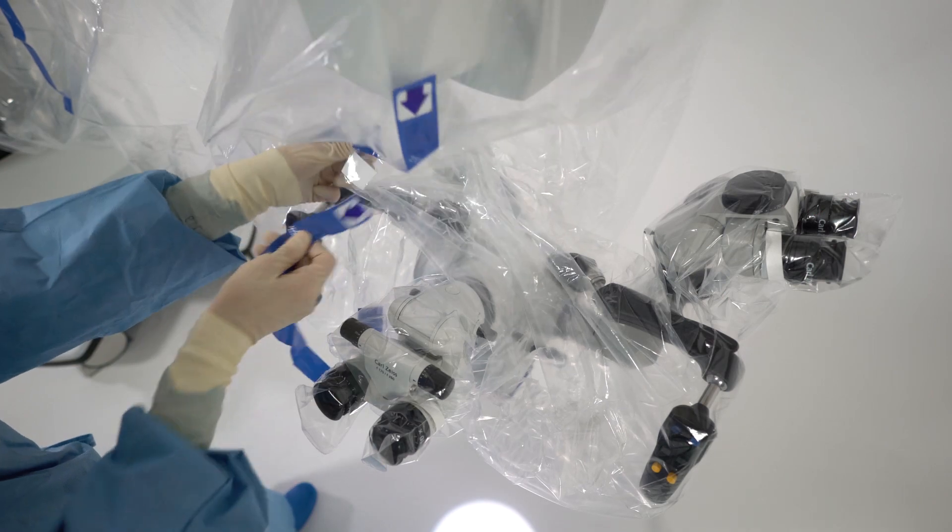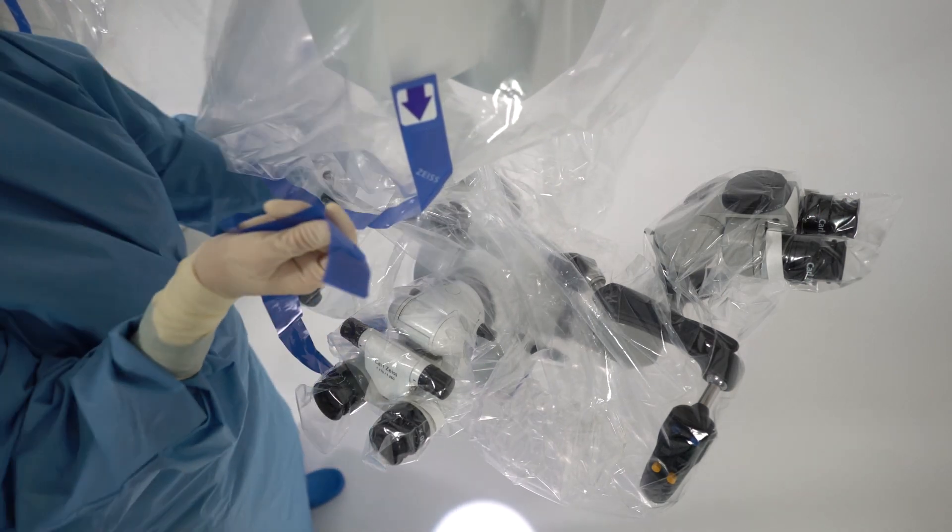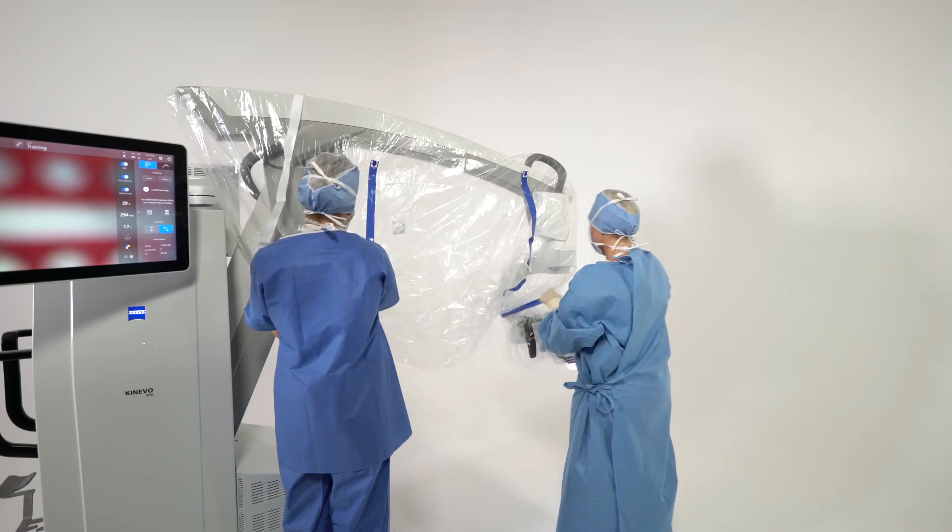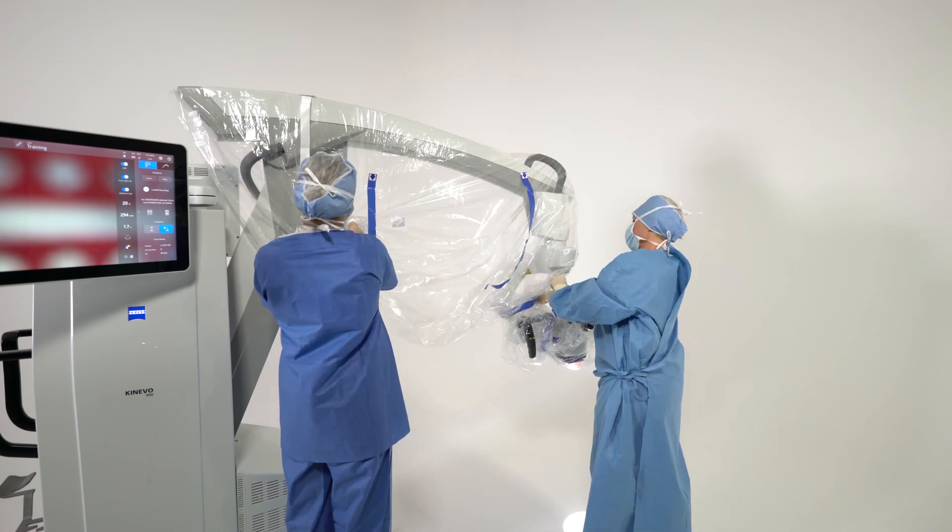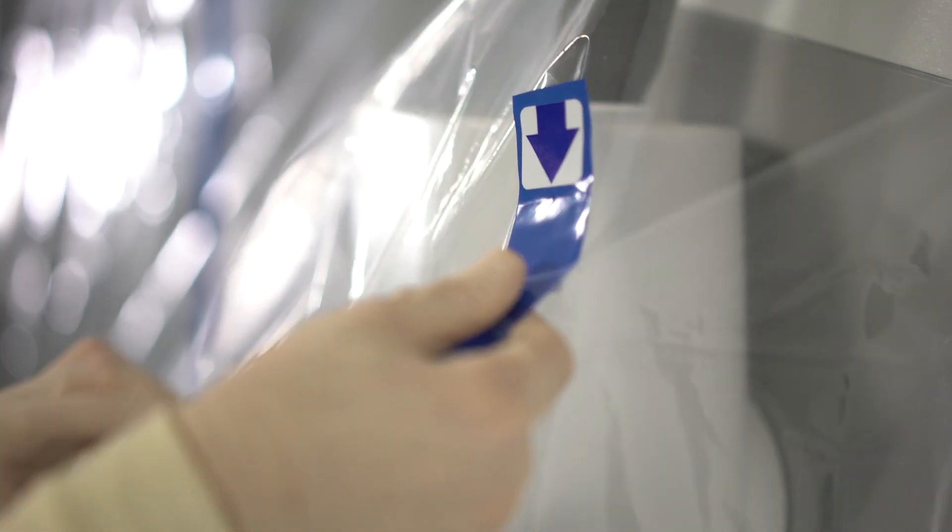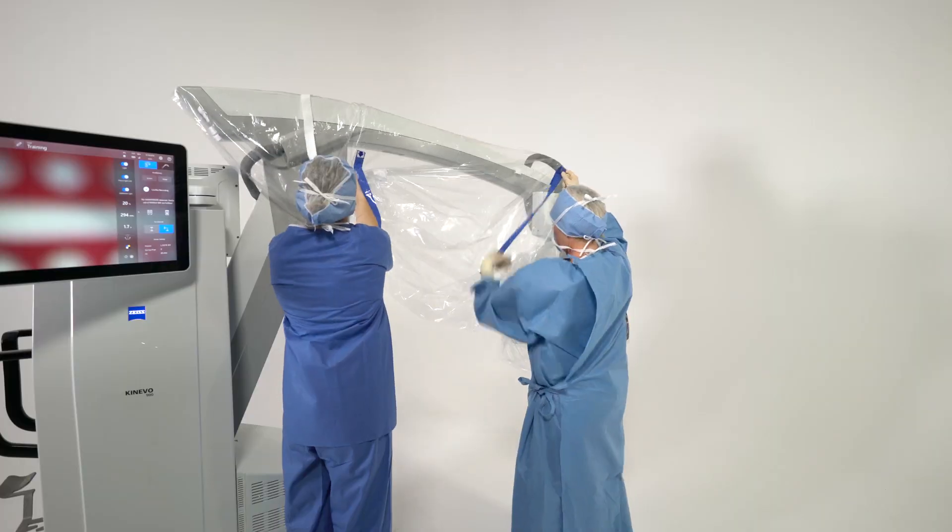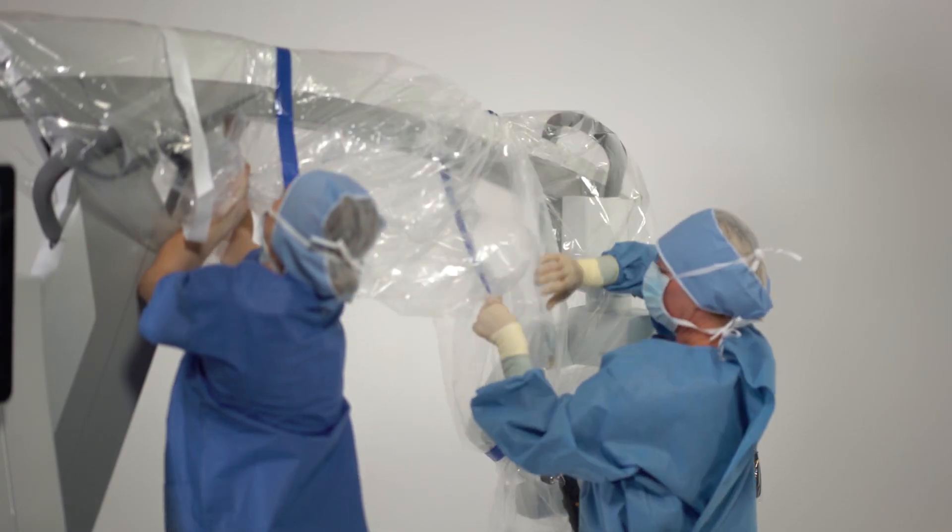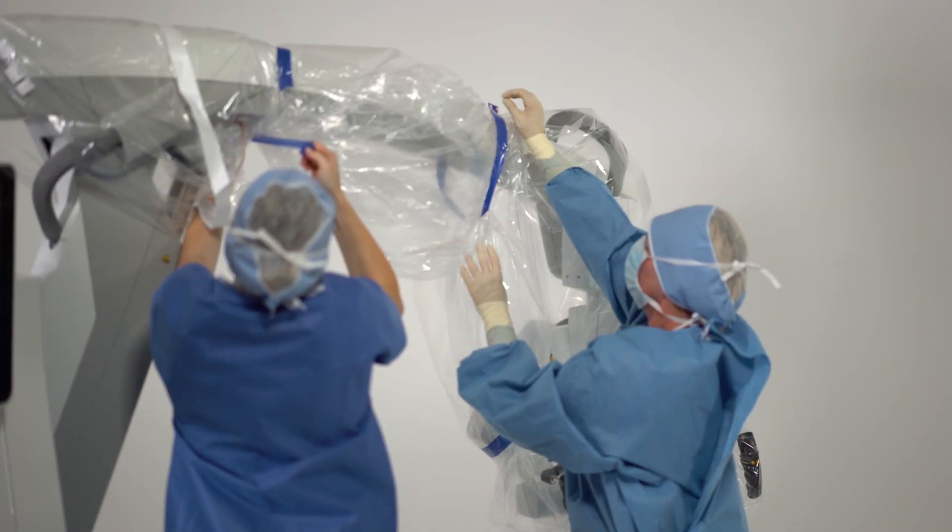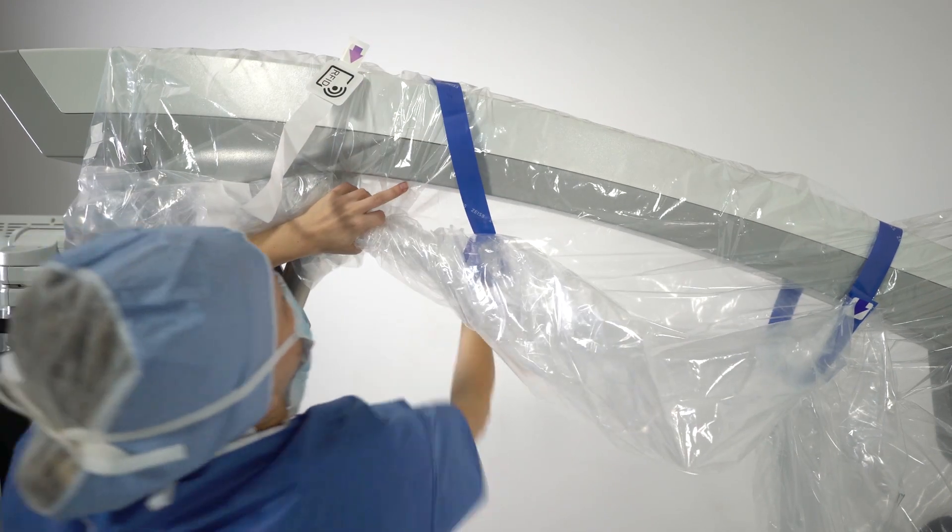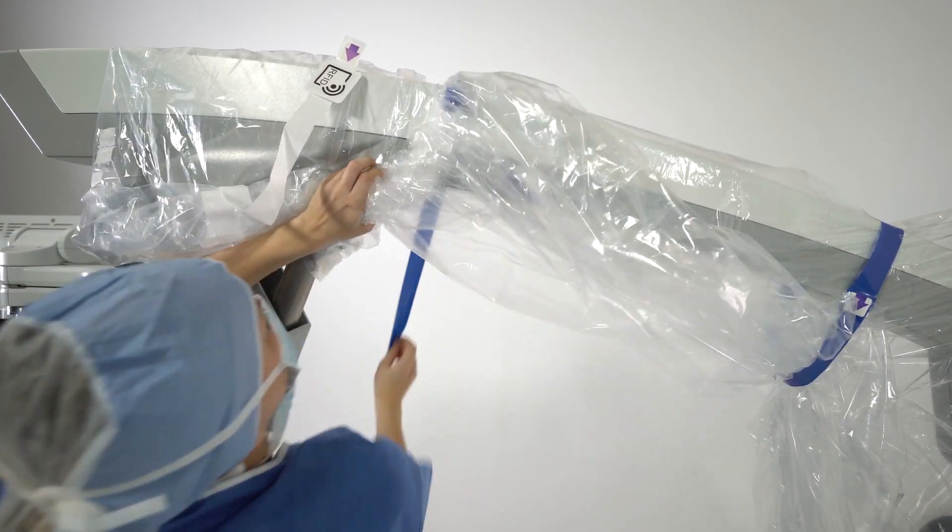Use the blue band with the arrow and wrap it around the Zeiss Kenevo 900. Gather any excess material and secure it. Tighten the blue stripe slackly to avoid tension. The very left blue stripe must be wrapped around the device very tightly to ensure maximal air suction.